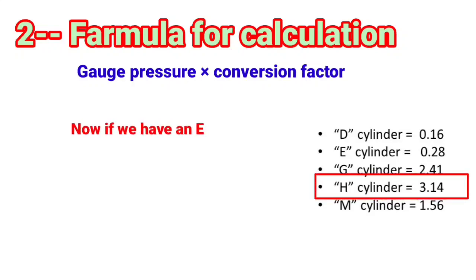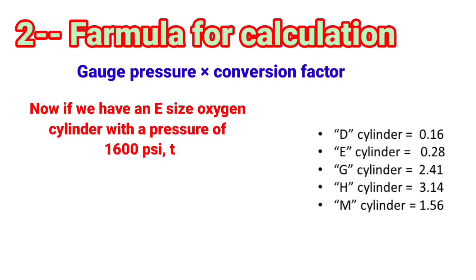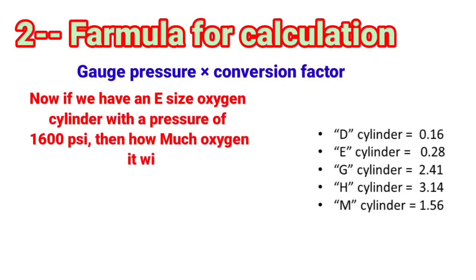Now if we have an E-size oxygen cylinder with a pressure of 1600 psi, then how much oxygen it will have? Gauge pressure is 1600 and conversion factor for E-size oxygen cylinder is 0.28. According to the above formula,